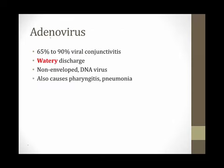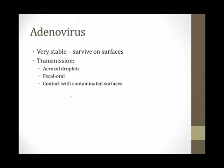Adenovirus is responsible for up to 90% of cases of viral conjunctivitis and leads to a watery discharge — the word watery is important in board questions because it helps distinguish this from the purulent discharge of bacterial conjunctivitis. Adenovirus is a non-enveloped DNA virus that also causes pharyngitis and pneumonia. It is famous for being very stable and able to survive on surfaces such as kitchen and bathroom counters, transmitted by aerosol droplets, fecal-orally, or contact with contaminated surfaces. This stability is why children with pink eye are often sent home from school — they can spread the virus and infect other children.